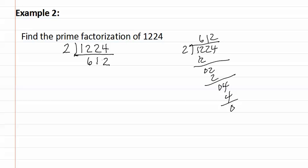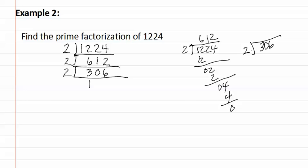Next, we see it is still an even number, so it divides by two again, giving 306. Once again it still ends in an even number, so another two can be divided in. Two goes into 306, and if you are not sure, always go to the side and do a quick long division. Two goes into three once, which makes a ten, two goes into ten five times, and two goes into six three times, which means the number here is 153.